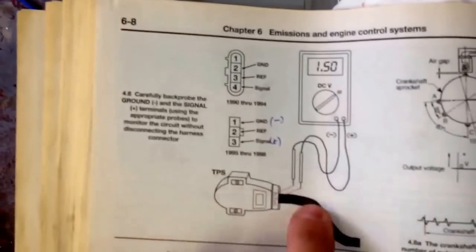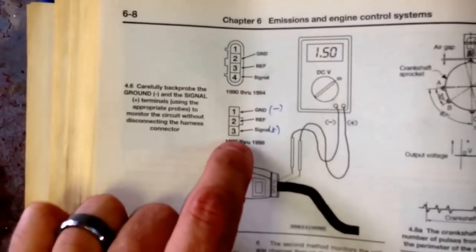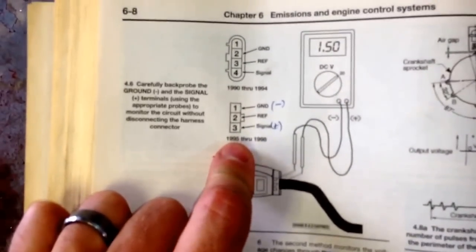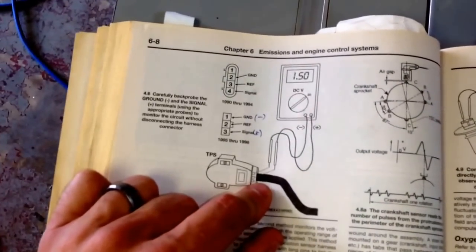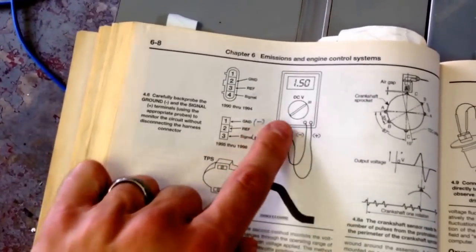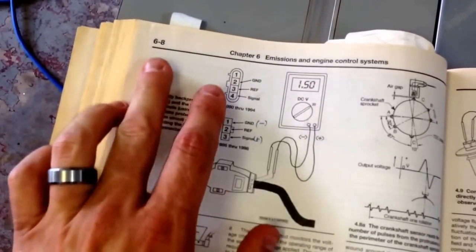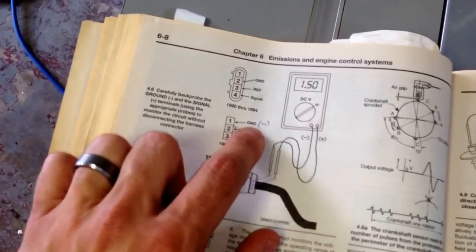There's another test you can do for voltage on the second page here, and this is a back probe. Between pins one and three here, which in my case I have four pins but the harness only has three pins. The sensor is a four pin connector but the harness is only three pins. You're supposed to get one and a half volts.